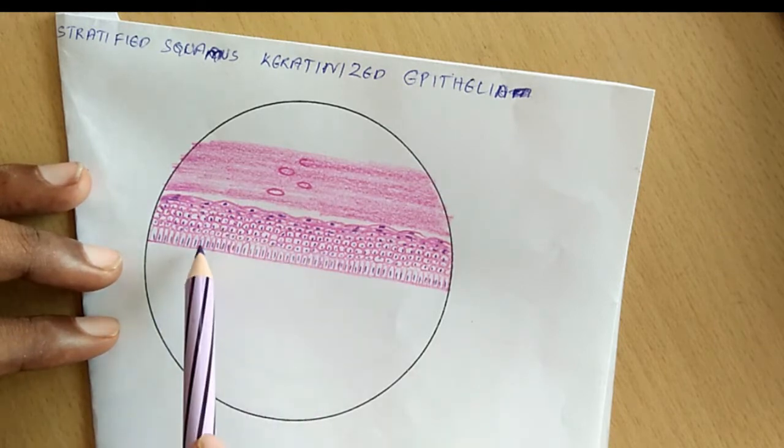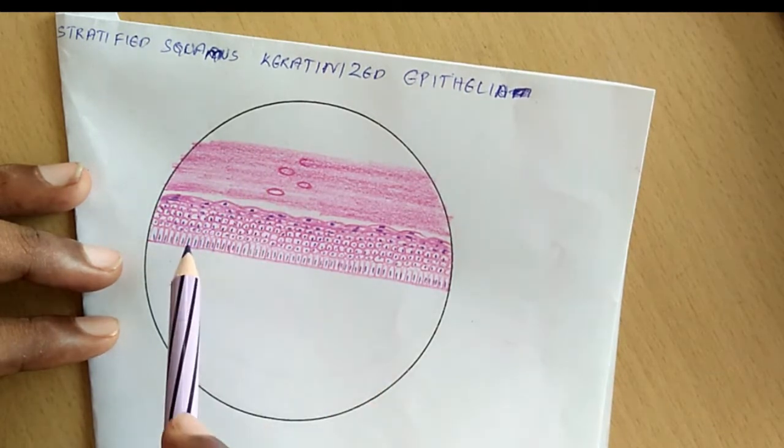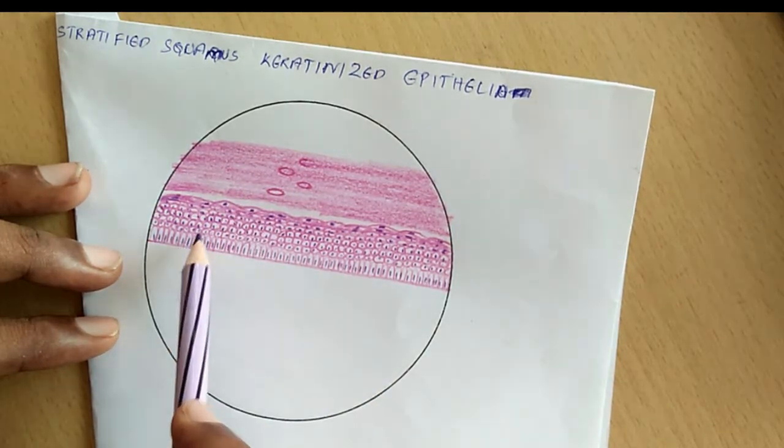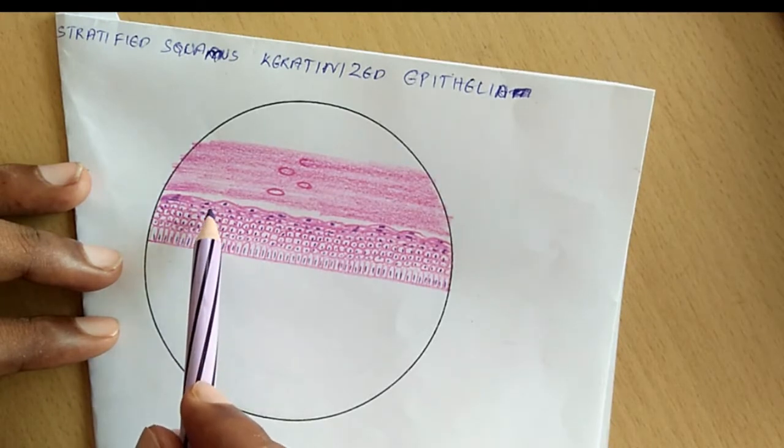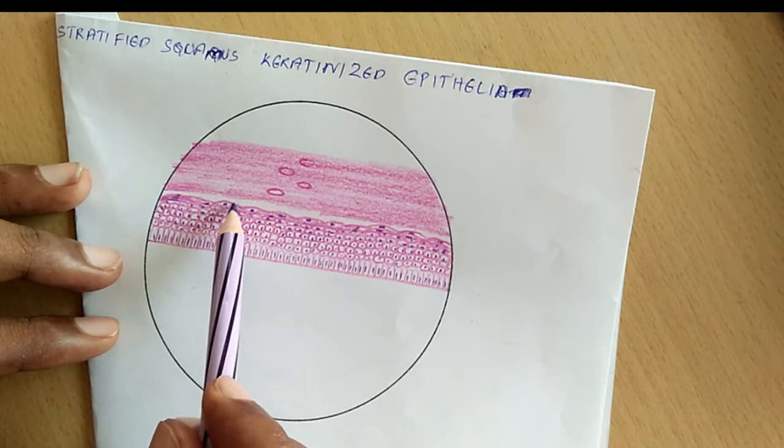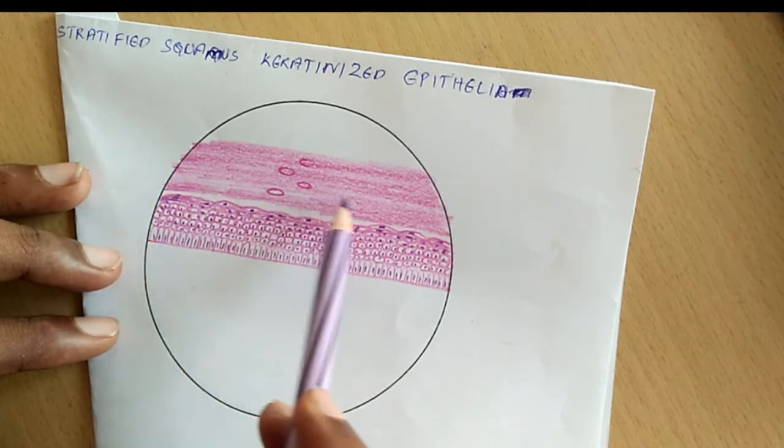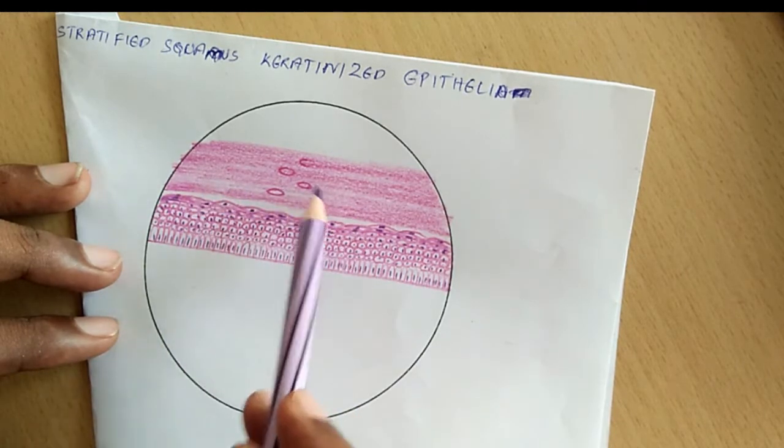Here the cells are moving from basement membrane to the top. As you can see initially they are columnar, then become polyhedral, then squamous, round, then squamous, then these cells die off, and they are appearing, the dead cells with keratin can be seen in this layer.